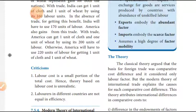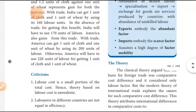America can get 1 unit of cloth and 1 unit of wheat by using 200 labor units with trade. Otherwise, in America, we would have to use 220 units of labor for getting 1 unit of cloth and 1 unit of wheat without trade.